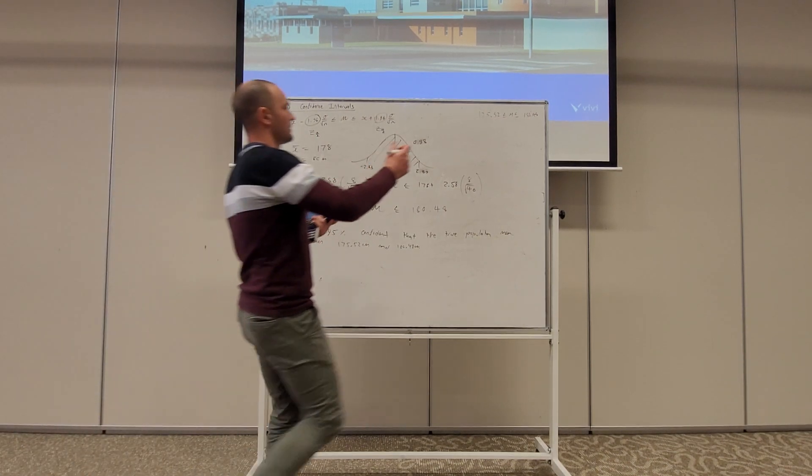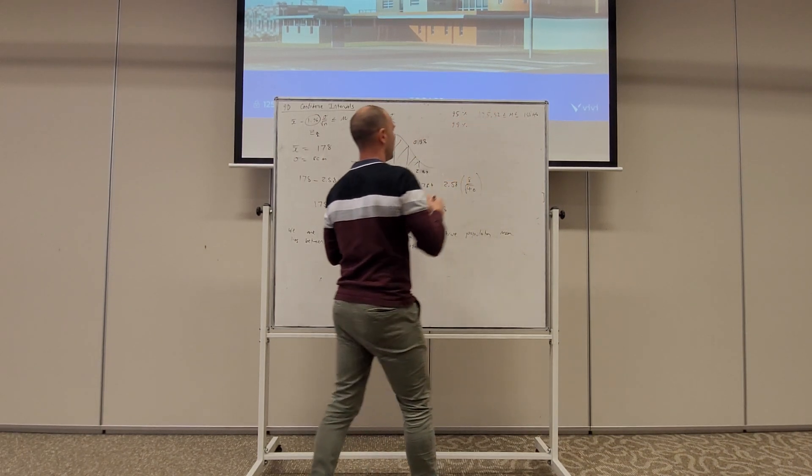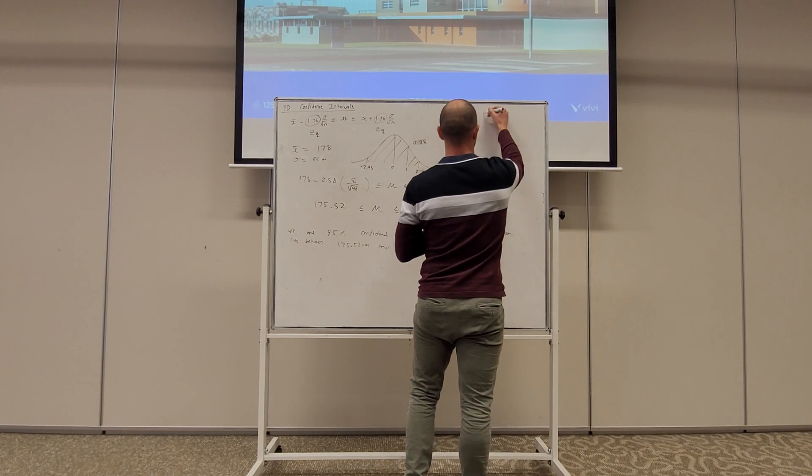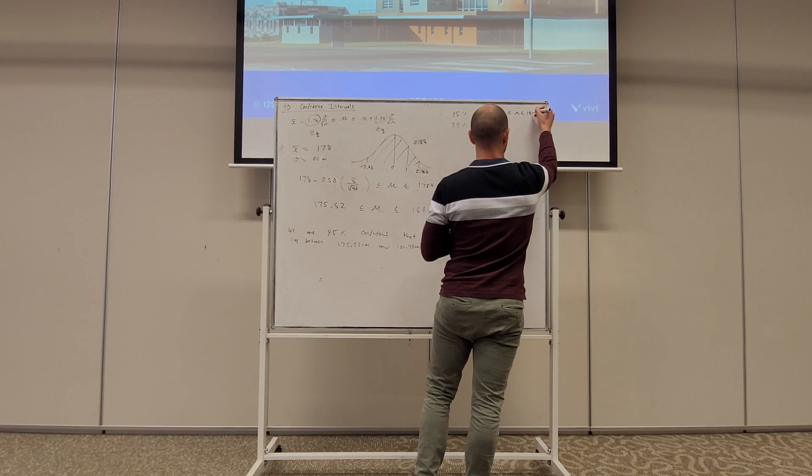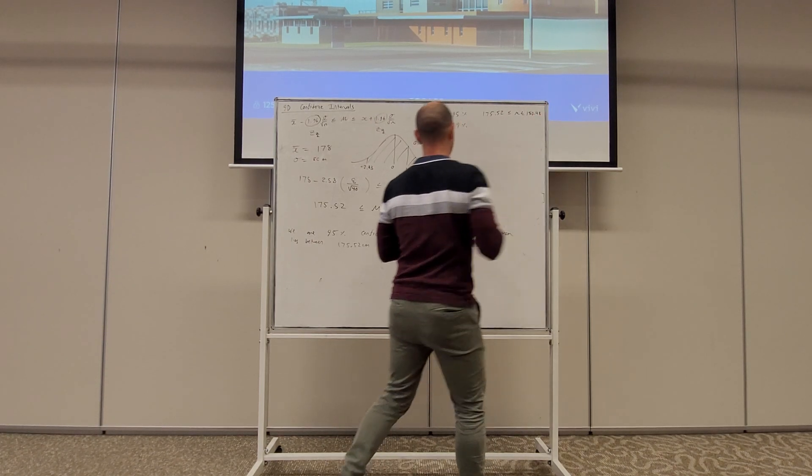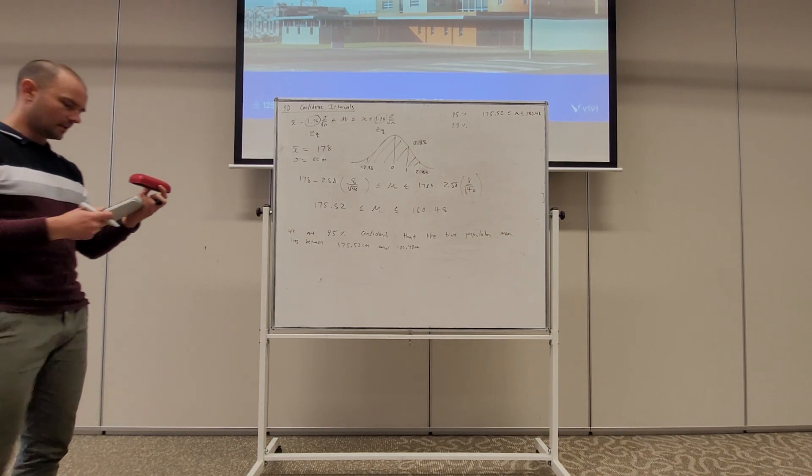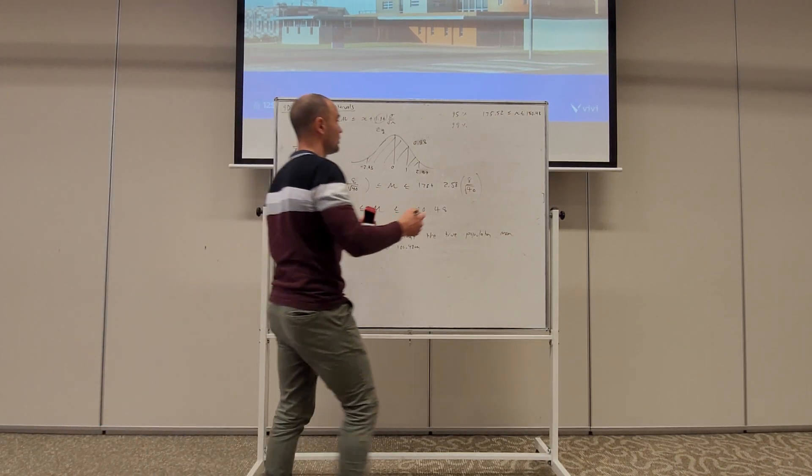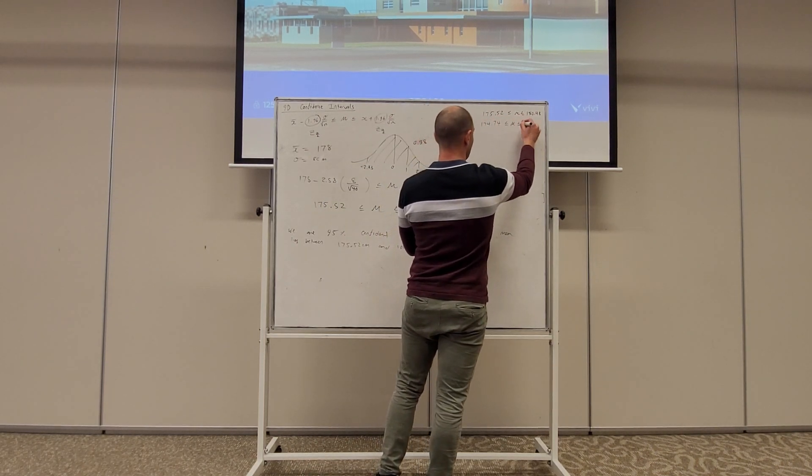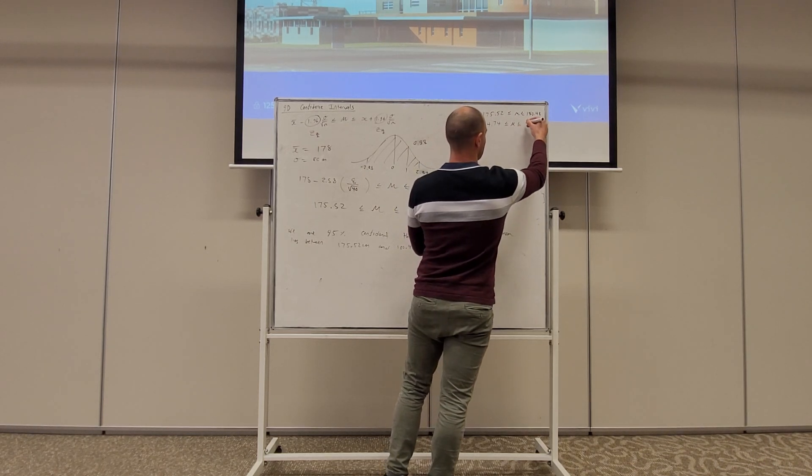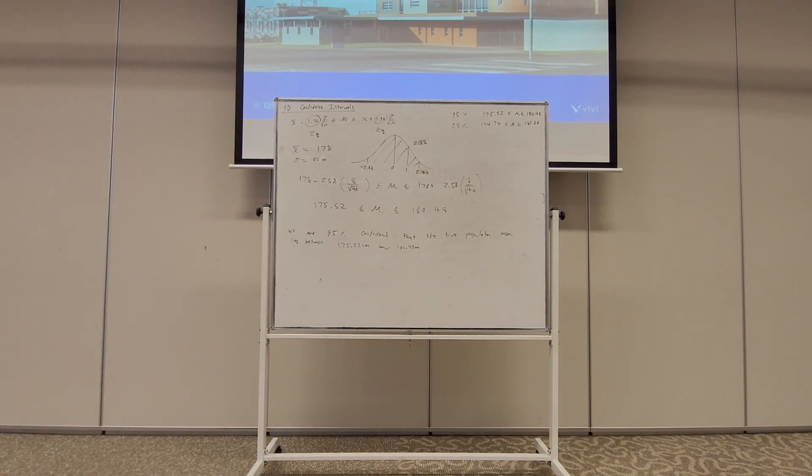So I'm going to just make a list up here. I've got 95%. Now we've got 99%. 175.52, 180.48. So when we do 99, we get 174.74 and we get 181.26.